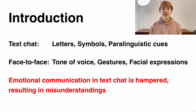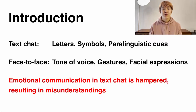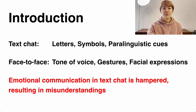In text chat, only letters, symbols, and paralinguistic cues such as emoticons can be used, whereas the tone of voice, gestures, and facial expressions that are used to infer the other person's emotions in face-to-face communication are often not available. As a result, emotional communication can be hampered, resulting in misunderstanding.